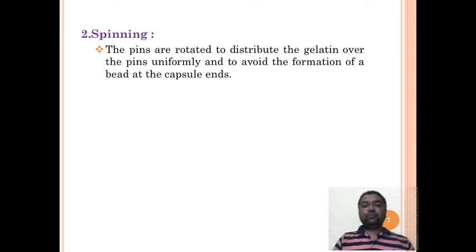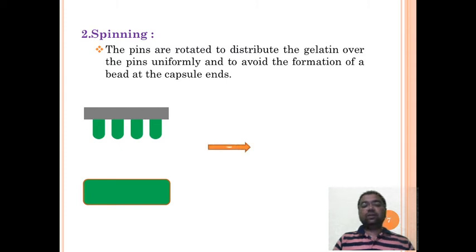What happens at the capsule ends is the gelatin will form beads. To avoid that we need to spin the capsule. After the dipping step, the pins get covered by gelatin solution. In spinning we spin these pins at 180 degree angle so it does not form beads and the gelatin is uniformly distributed over the pins.